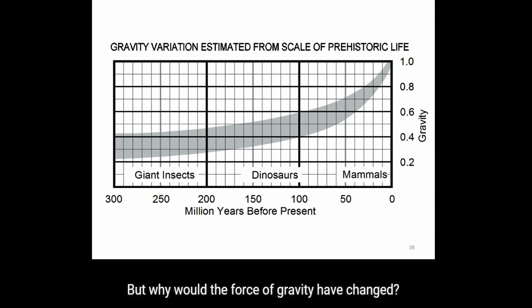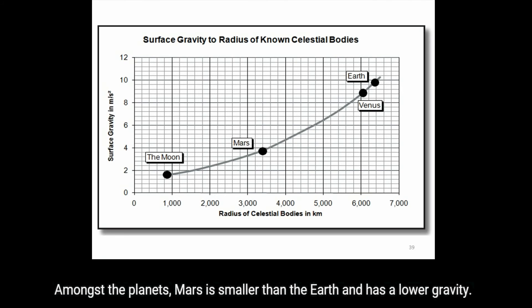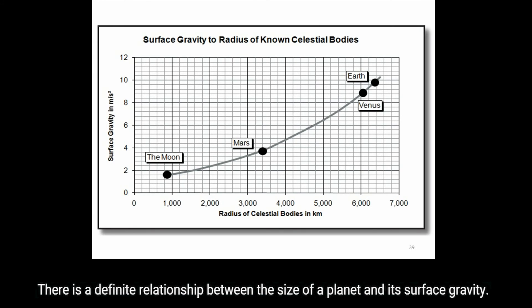But why would the force of gravity have changed? There is one obvious fact about celestial bodies like the Earth. Surface gravity is proportional to size and mass. The Moon has a low surface gravity to match its small size. Amongst the planets, Mars is smaller than the Earth and has a lower gravity. Venus approaches both the Earth's diameter and gravity. There is a definite relationship between the size of a planet and its surface gravity.